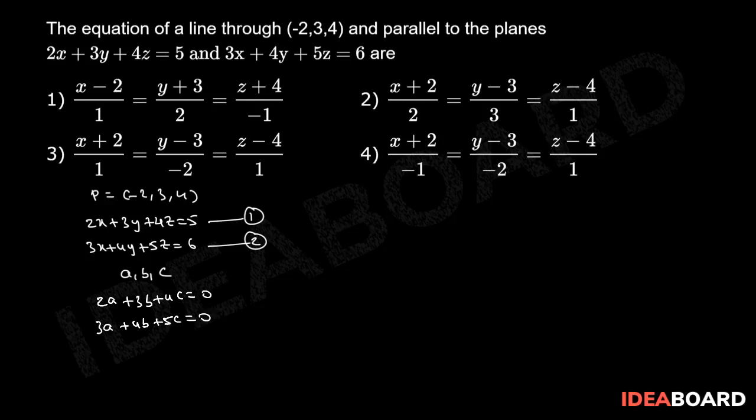Now, solving these two equations by using cross multiplication method, we have 3, 4, 2, 3, 4, 5, 3, 4, a, b, c. Therefore, we have a/(15 - 16) = b/(12 - 10) = c/(8 - 9).